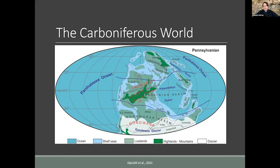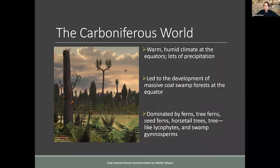Over the poles, high pressure systems track a band of precipitation right at the equator. During this glaciation there's very little seasonality, and constant extensive precipitation at the equator. Because of this warm, humid, high-precipitation equatorial climate, we have the development of massive coal swamp forests along the equator.